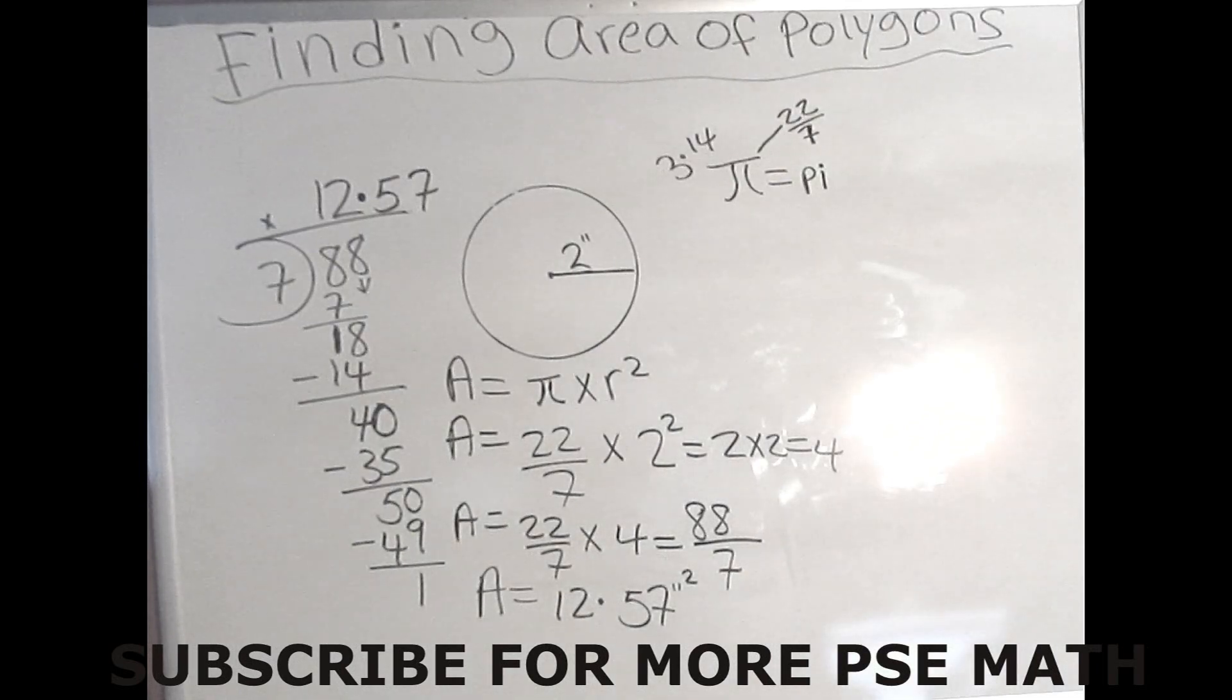And remember when using pi as 3.14 or 22 over 7, your answer should basically be close to the same. Maybe your 0.57 would be 1 less or so, or 2 less, but nothing that much. It will be basically the same answer.